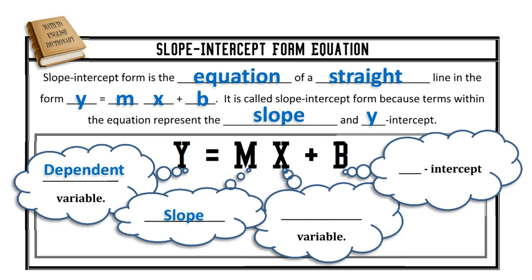The slope m will be an actual value in fraction form. x is the independent variable — since it's still a variable, we'll leave it as x. b is the y-intercept. This value is the y-coordinate of the ordered pair at the intercept, or where this particular line crosses the y-axis.